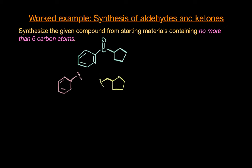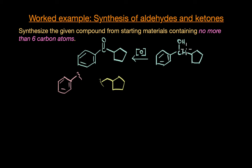To recap, our starting reactants should have this carbon skeleton. One of the most popular ways to synthesize a ketone is to oxidize alcohols — specifically, oxidation of secondary alcohols gives us a ketone. If we had this secondary alcohol, we can easily synthesize this ketone by a simple oxidation method.